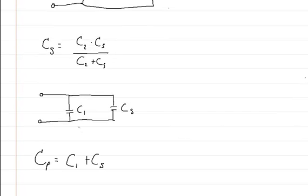And then capacitors in parallel, those just sum together. So you could just add C1 and CS together directly. And that will give you the capacitance of the entire circuit.